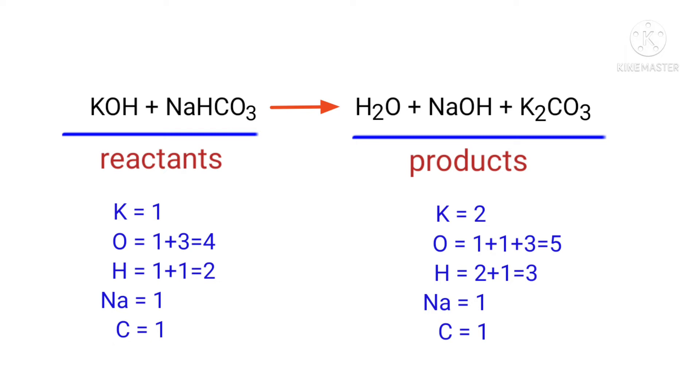The number of atoms are not balanced on both sides. To balance the chemical equation we need to make use of coefficients. A coefficient is a number that we place in front of a chemical formula.